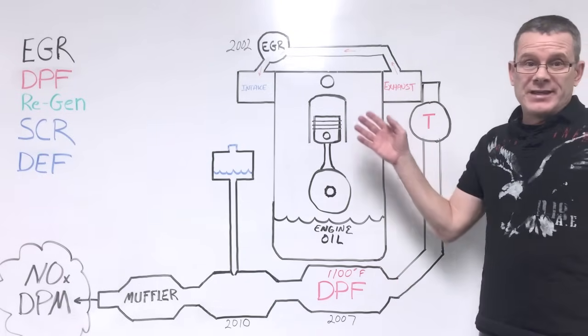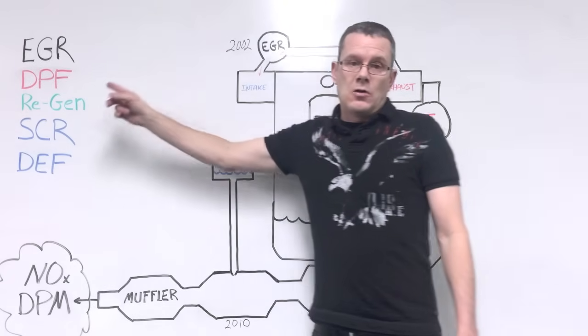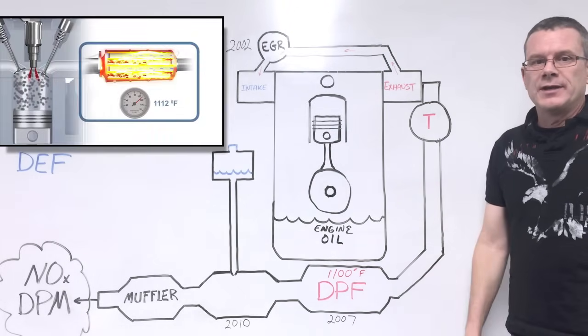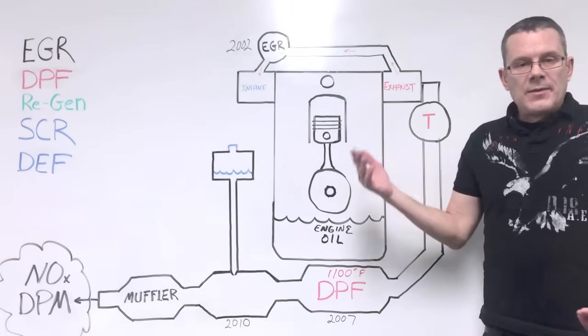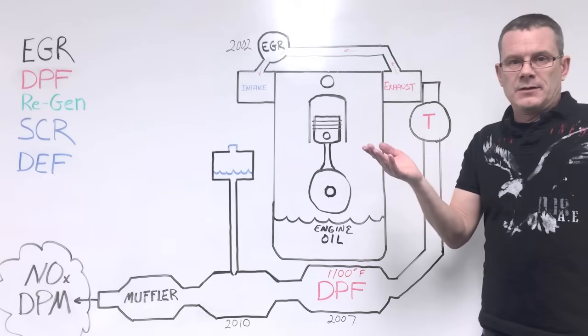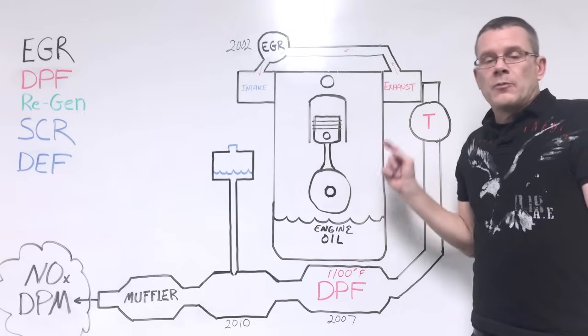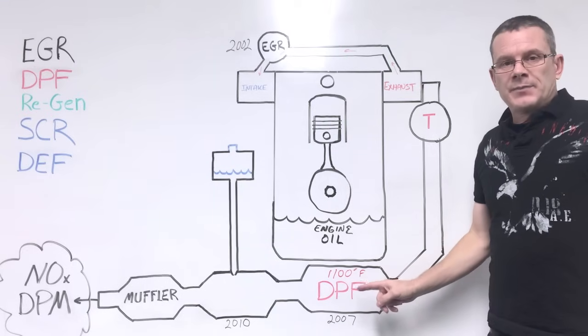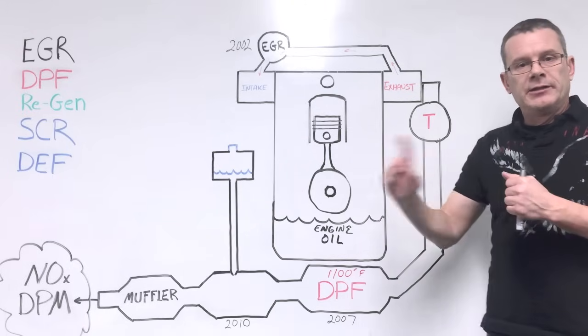That causes back pressure to the engine and causes it to run less efficiently, and that triggers the computer to go into regen mode, or regeneration. For regeneration, we've got to bring that DPF up to about 1100 degrees, about 600 degrees Celsius. One thing that car manufacturers came up with was to dump fuel into the combustion chamber after the normal combustion had already taken place. It wasn't fuel that went into providing more power for the engine. It was fuel simply meant to provide heat and bring the DPF up to that temperature necessary to burn off the diesel particulate matter.